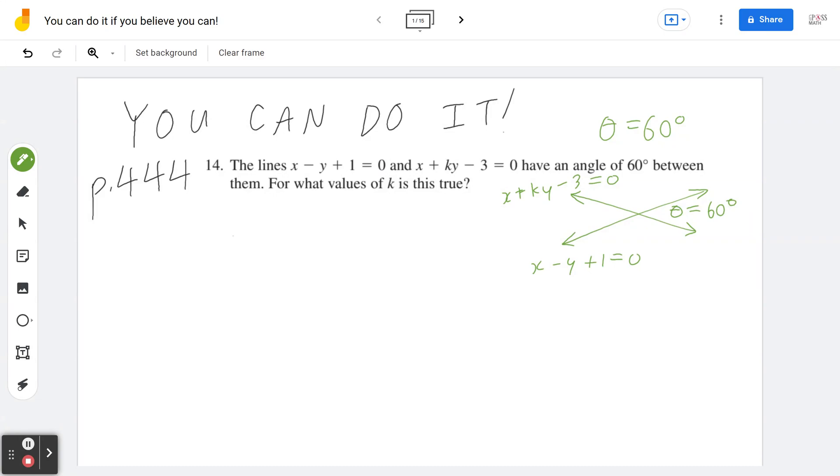Think about this in terms of direction vectors. If you think about x minus y plus 1 equal to 0, you can bring negative y to the right, so this is going to be y equal to x plus 1. This means the slope is going to be 1, or 1 over 1, which implies the direction vector is going to be (1, 1). That just means you go right by 1, up by 1.